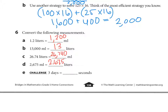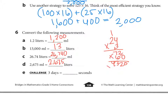Challenge: three days equals how many seconds? There are 24 hours in a day, so 24 times 3 is 72 hours. There are 60 minutes in an hour: 72 times 60 is 4,320 minutes. Multiply by 60 seconds per minute. The answer is 259,200 seconds. And that's all for today.